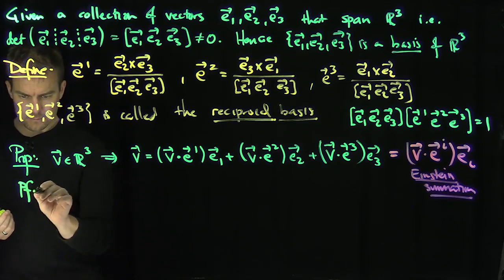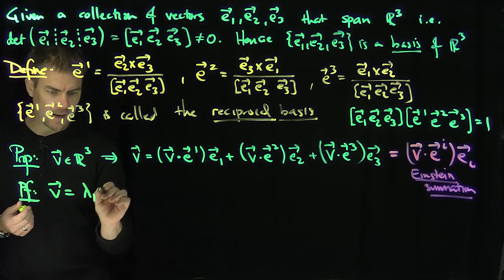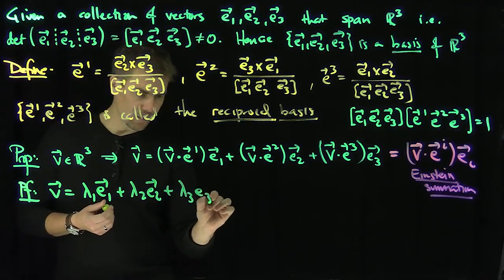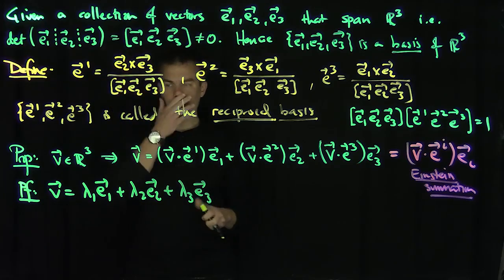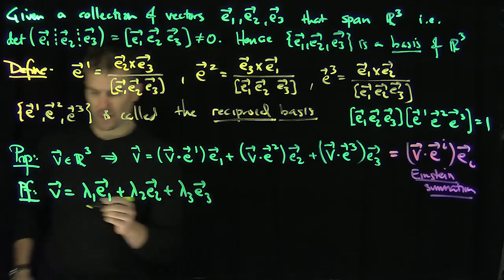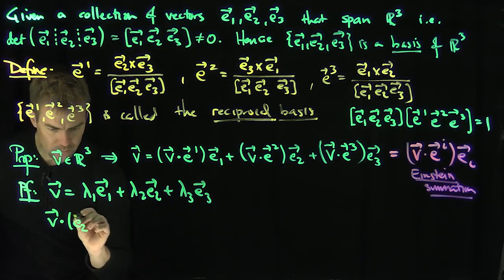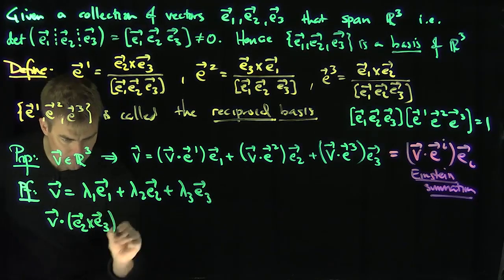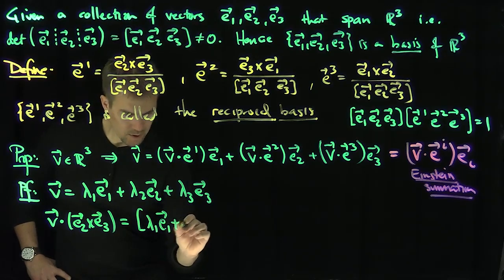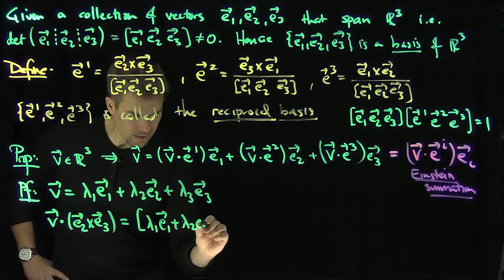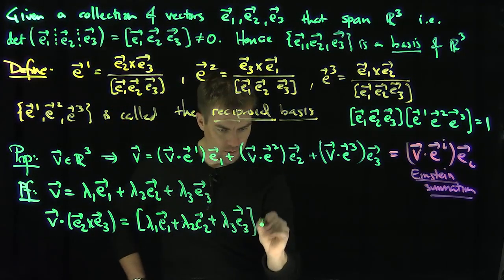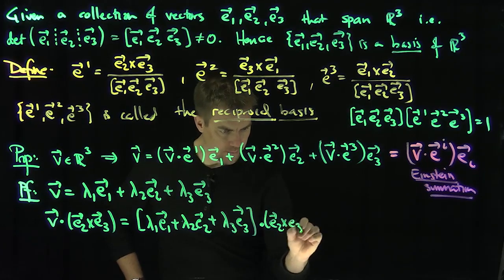So how do we prove something like this? Well, we know that V is some number lambda 1 E1 lower, plus lambda 2 E2 lower, plus lambda 3 E3 lower. And so what I can do now is I can take both sides of the equation, I can cross both sides of the equation with, for example, E2, E3. So if I look at V dot E2 cross E3, what would that give me? That would be lambda 1 E1 plus lambda 2 E2 plus lambda 3 E3 dot product with E2 cross E3.